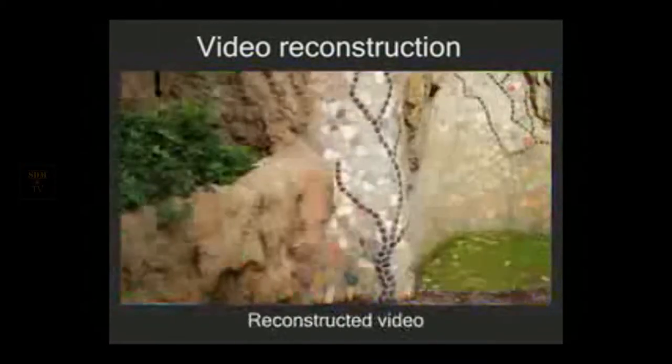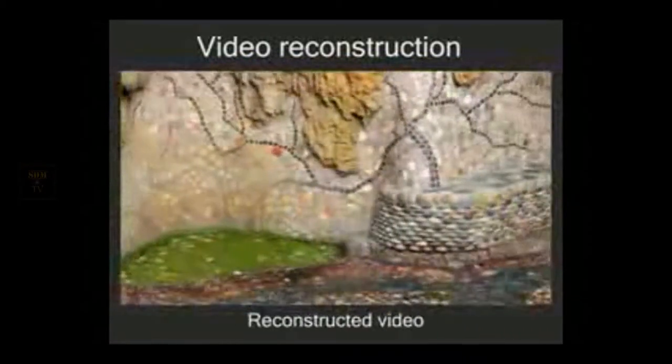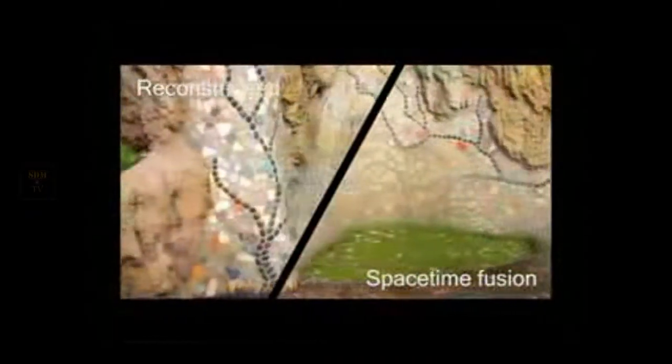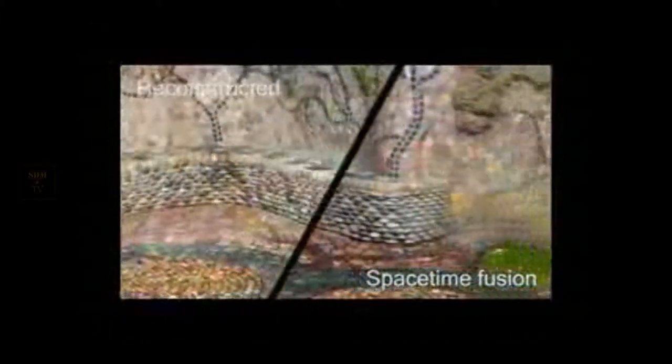The reconstructed video may contain artifacts. For example, in this reconstruction, we can see holes, seams, and temporal incoherence. Our space-time fusion technique reduces these artifacts by incorporating the temporal gradients of the input video.